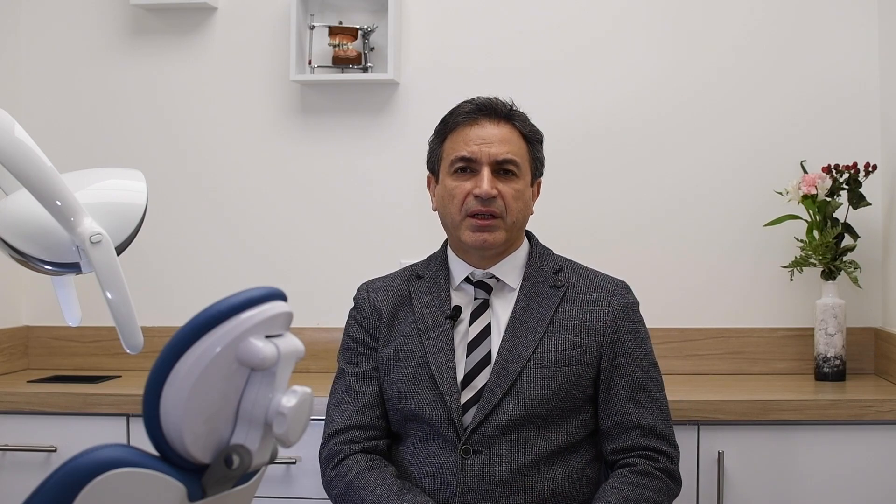Another clinical scenario for improving difficult movement is uprighting the molars. We know when we are uprighting the molars, especially in areas where the cortical bone on the distal side is very dense, the possibility of resorption at the cervical part of the molar increases significantly. By application of MOP, we can improve the quality of the bone, decrease the bone density, and prevent resorption in the cervical area of the molar when we are uprighting it.